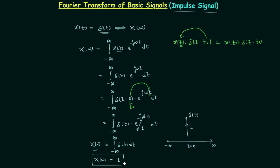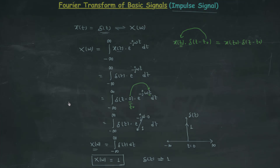So the Fourier transform of the unit impulse signal δ(t) is equal to 1. It is very easy to calculate, and in the next presentation we will calculate the Fourier transform of exponential signals.